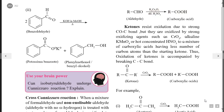A specific example: propanal (a three-carbon aldehyde) when treated with hydrazine first gives the hydrazone C2H5–CH=N–NH2. This hydrazone is then treated with KOH and ethylene glycol, converting the three-carbon aldehyde into propane (a three-carbon alkane), with nitrogen gas as a side product.